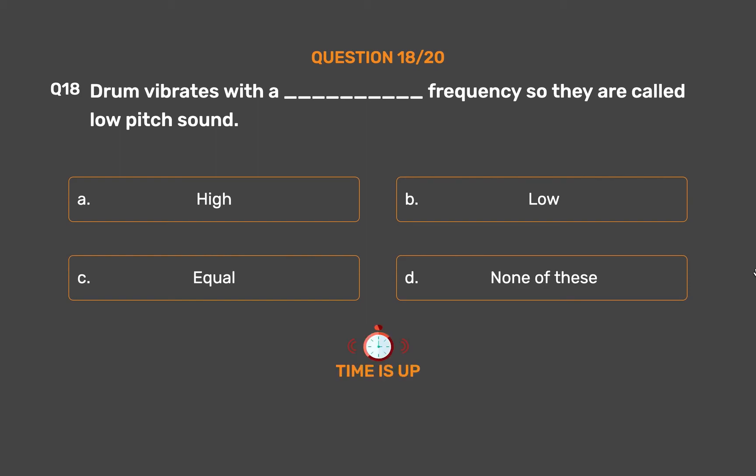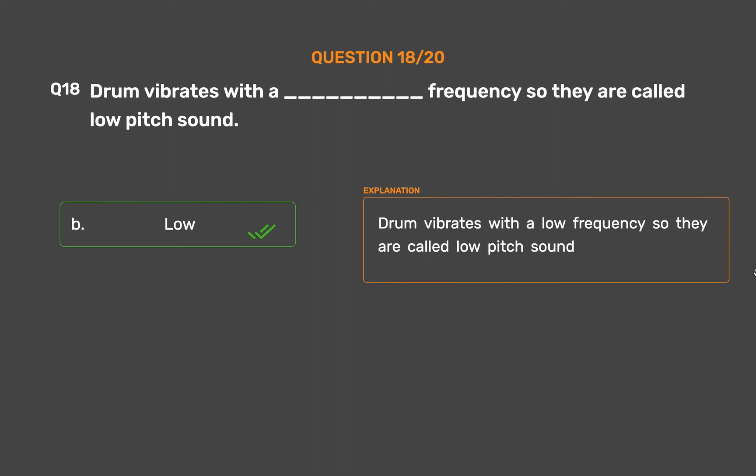The correct answer is Option B, Low. A drum vibrates with a low frequency so they are called low pitch sound.